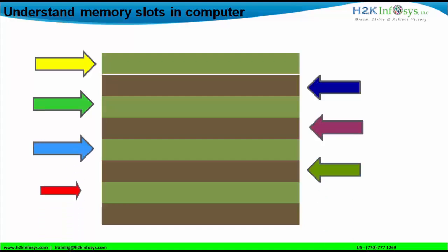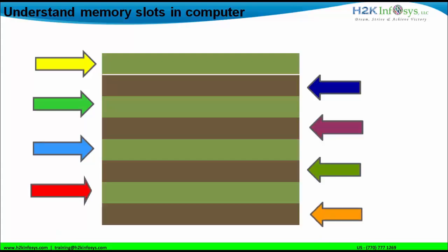Then we have the sixth, seventh, and eighth memory slot. So in this particular diagram there are eight memory slots. Like this, there will be innumerable numbers of memory slots present inside the computer based on the RAM that we have.